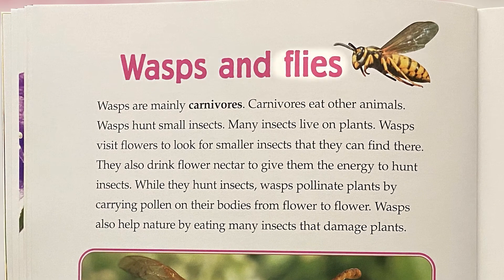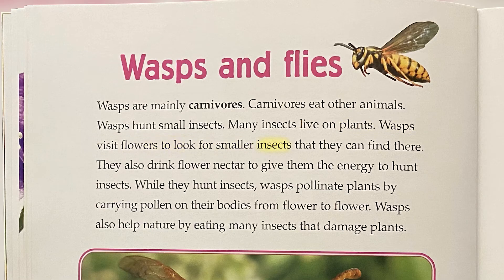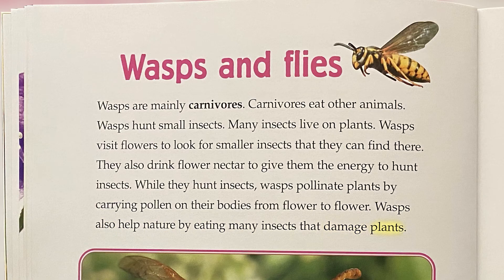Wasps and flies: Wasps are mainly carnivores — carnivores eat other animals. Wasps hunt small insects. Many insects live on plants, so wasps visit flowers to look for smaller insects there. They also drink flower nectar to give them the energy to hunt. While they hunt insects, wasps pollinate plants by carrying pollen on their bodies from flower to flower. Wasps also help nature by eating many insects that damage plants.